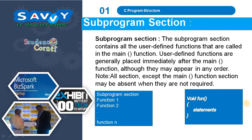The subprogram section contains all user-defined functions that are called in the main function. User-defined functions are generally placed immediately after the main function, though they may appear in any order. Note that all sections except the main function section may be absent when they are not required. Each sub-function — function one, function two, through function n — follows the same function syntax.